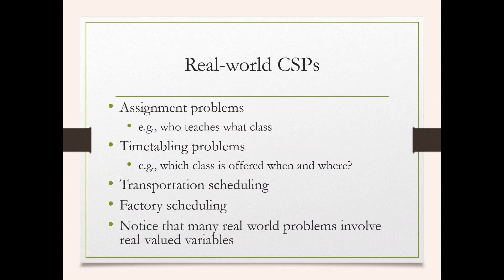Now let's consider some real-world CSP problems. One is the assignment problem: who teaches what class — for example, no other teacher should be assigned to the AI class if one is already teaching it. Another is the timetabling problem: which class is offered when and where — students should not have another class at the same time, and a classroom should not be double-booked. Other examples include transportation scheduling and factory scheduling. Note that many real-world problems involve real-valued variables.